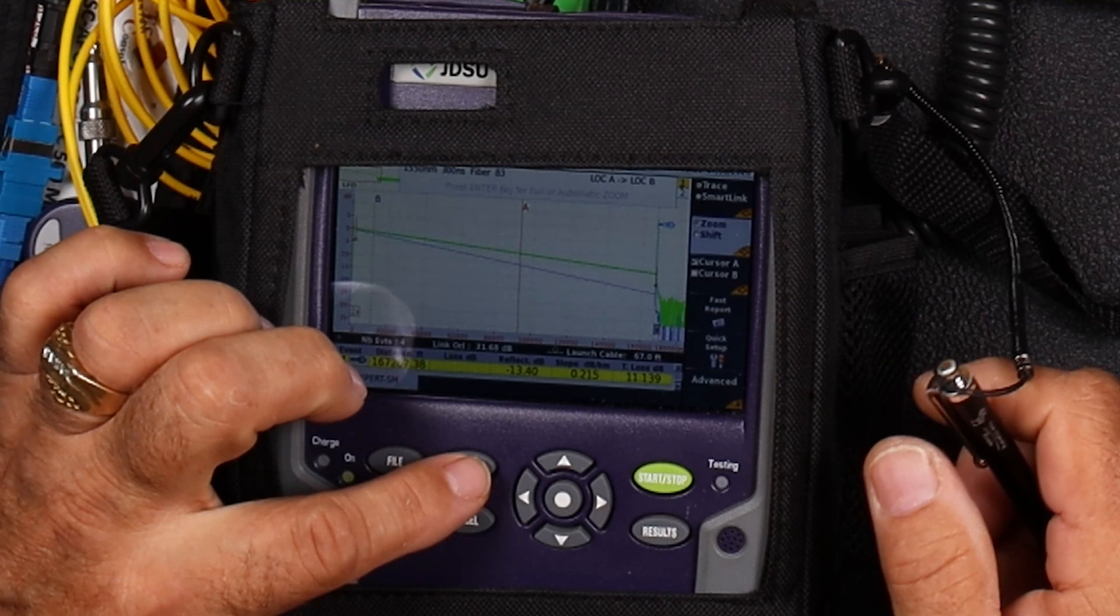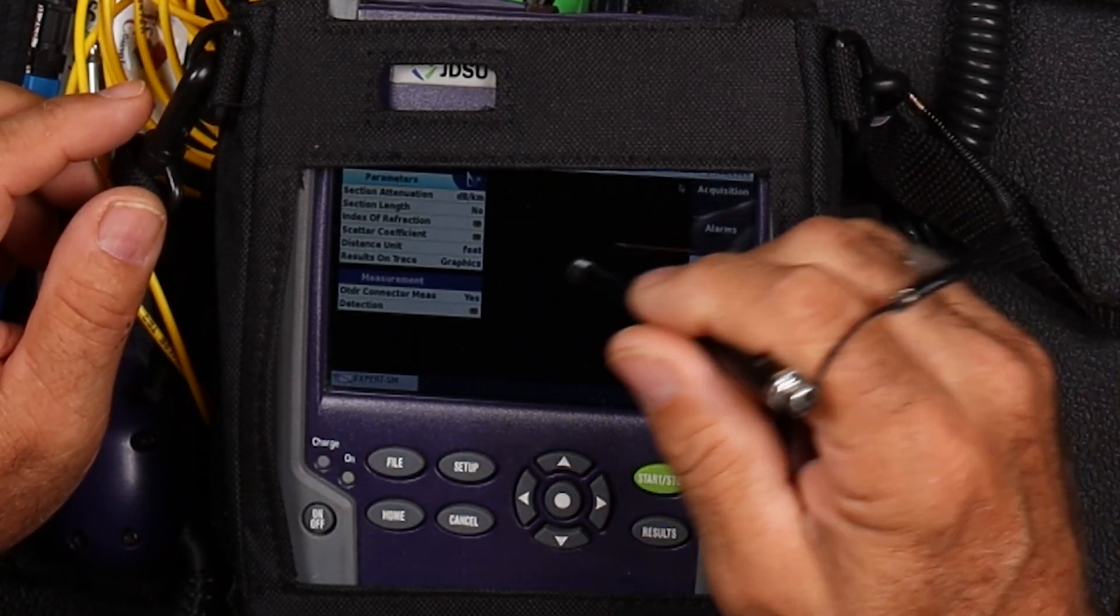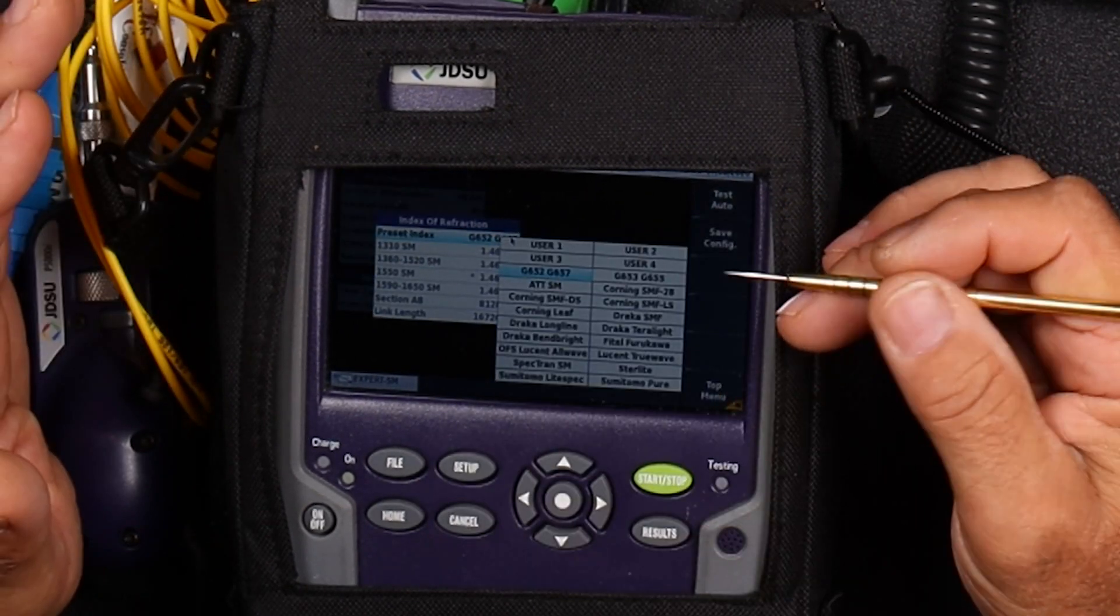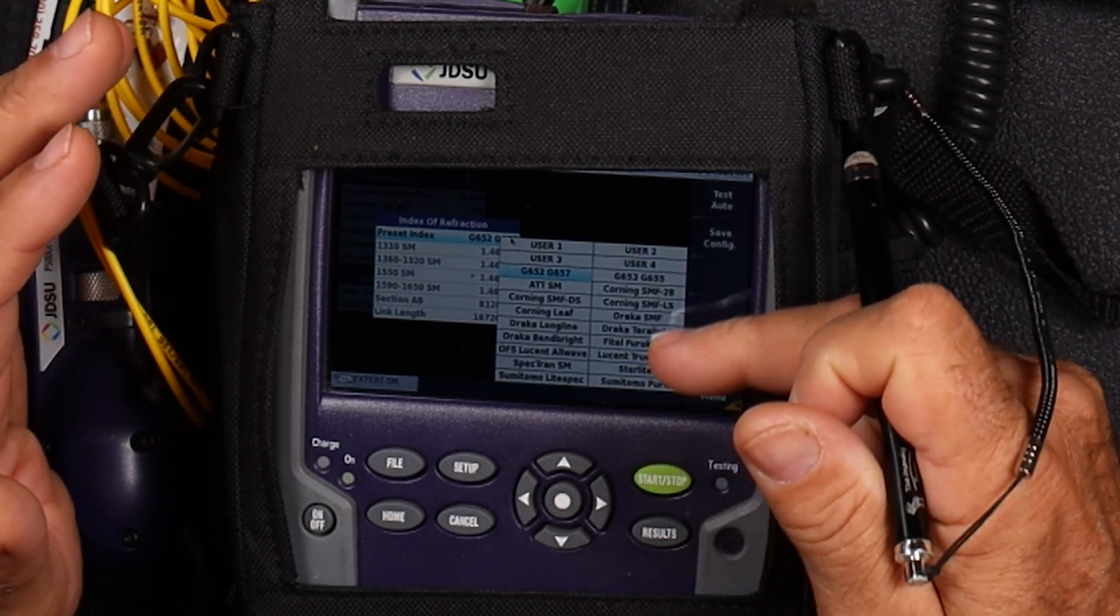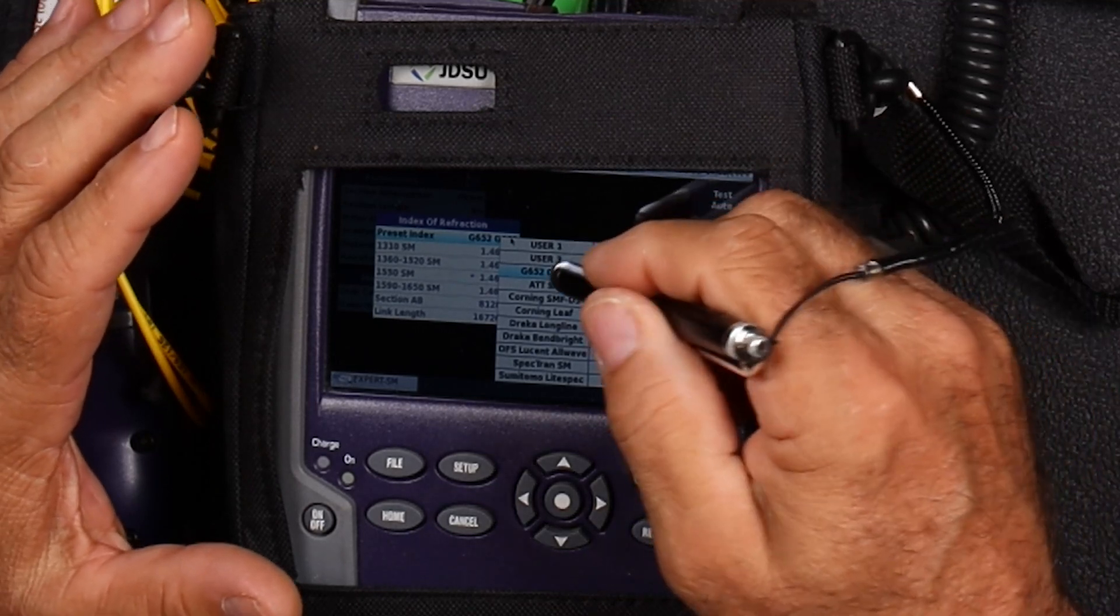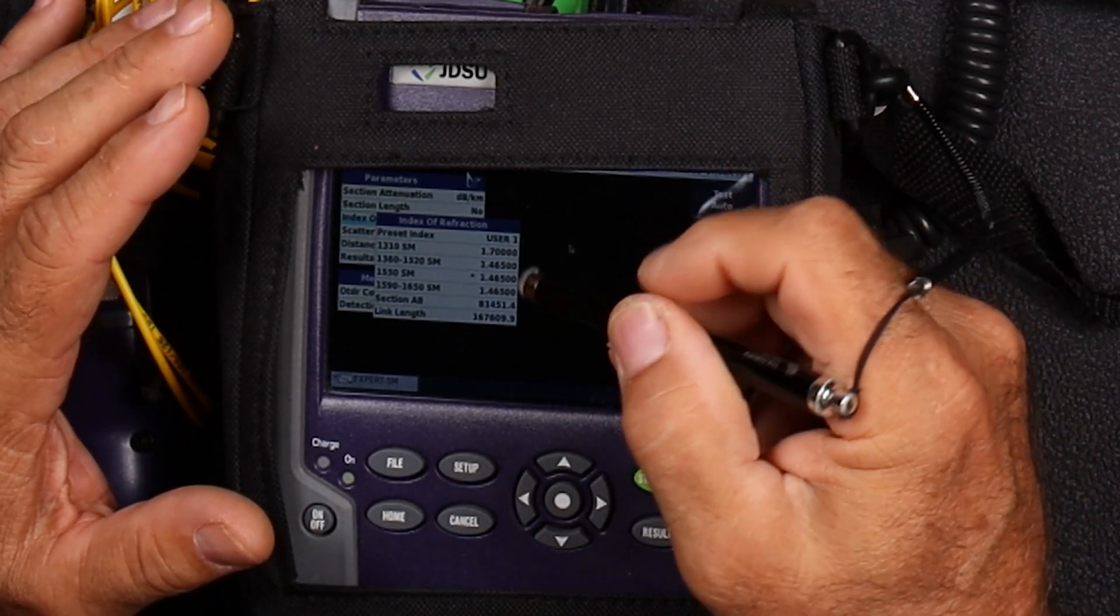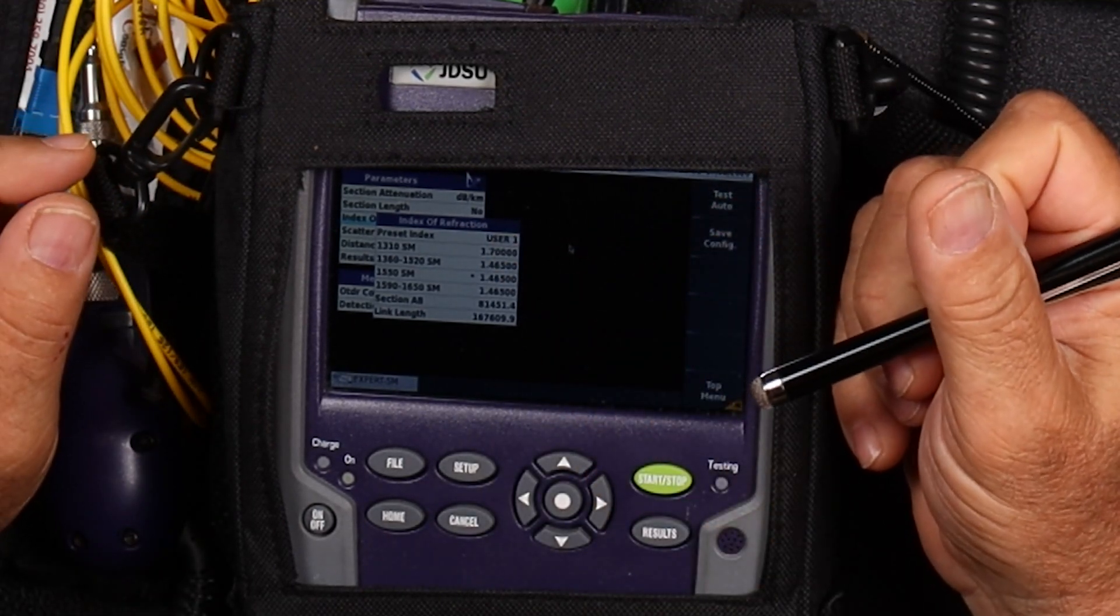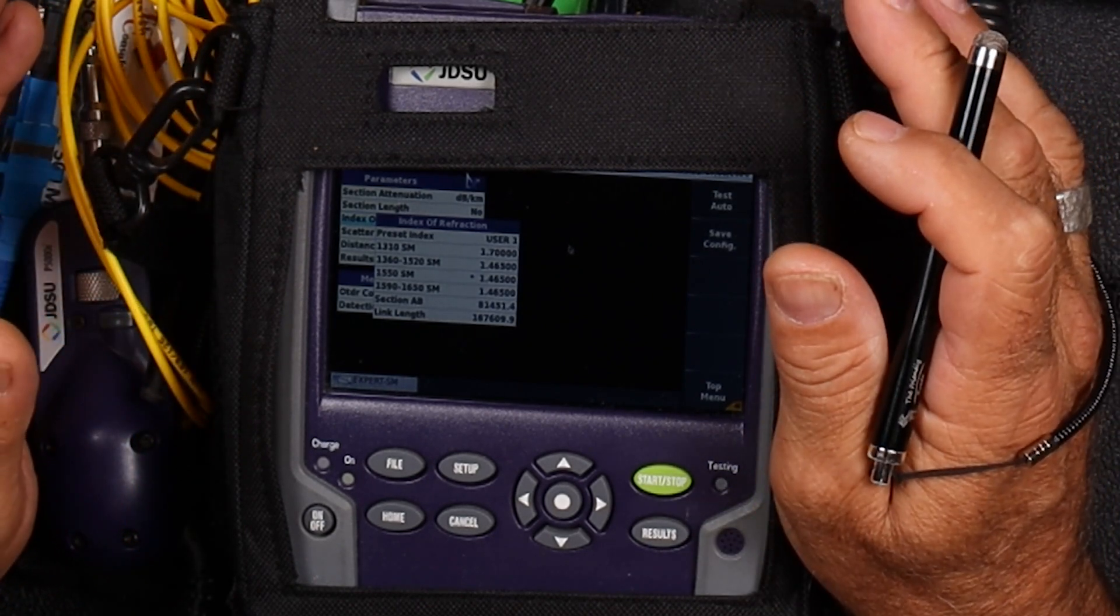Notice what's going to happen here. We're going to go into our setup and real quickly, we're just going to go to our analysis and go to our index of refraction. If you don't know the IOR of the fiber, if you haven't looked up the manufacturer specifications on it, don't change this. Let's go into our user and we're going to have on our 1310, we have the IOR set to 1.7.